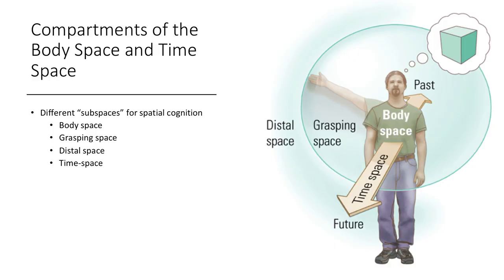Here's a recap of the four spaces. Body space is everything on your body. Grasping space is everything you can reach with your arms and legs. Distal space is everything outside of that, which is where you can move your body in and out of. And time space is the future or the past.